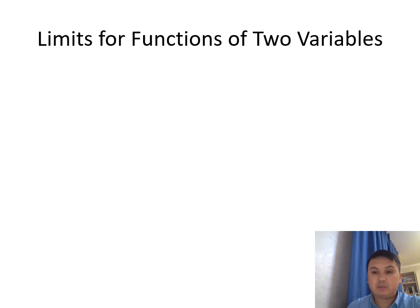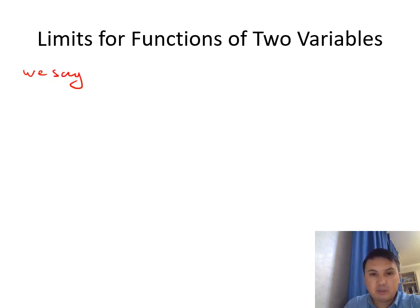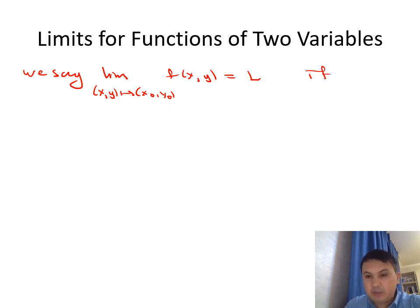How do we define limits for a function of two variables? I won't give the rigorous definition, so this will be somewhat informal. Assume we are given a function of two variables. We say the limit as (x, y) goes to (x₀, y₀) of f(x, y) is equal to L, where my domain consists of x and y coordinates and I need to let (x, y) go to another coordinate (x₀, y₀).